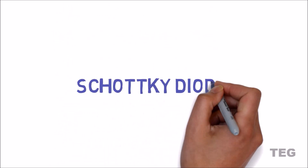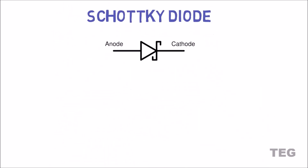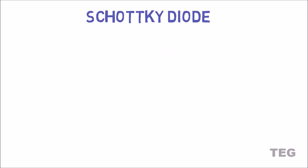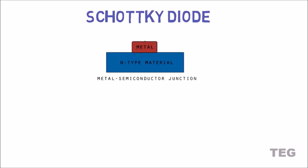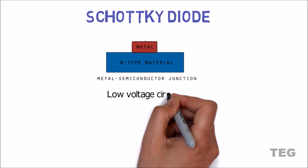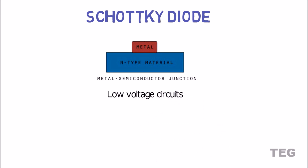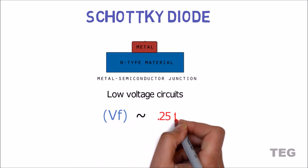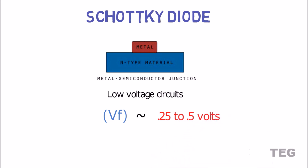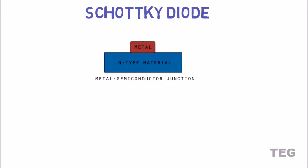Schottky diode — this is the symbol of the Schottky diode. It looks similar to a rectifier diode but there are many differences between them. Unlike a rectifier diode, the junction of a Schottky diode is between an N-type semiconductor and a metal plate. The Schottky diode, also known as a barrier diode, is used mainly in low voltage circuits because its forward voltage drop is less than a rectifier diode — typically in the range of 0.25 to 0.5V, whereas a rectifier diode is between 0.7 to 0.9V. Electrons are the majority charge carriers on both sides of the junction, making it a unipolar device.